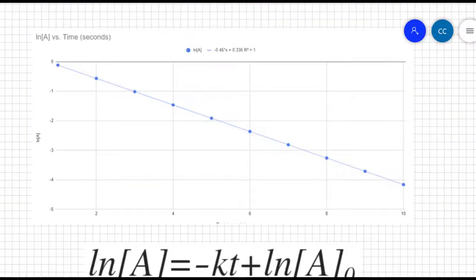From the graph we made, we learned two things. We know that this is a first order reactant. And because we know that the slope is negative 0.45, K is going to be equal to positive 0.45.